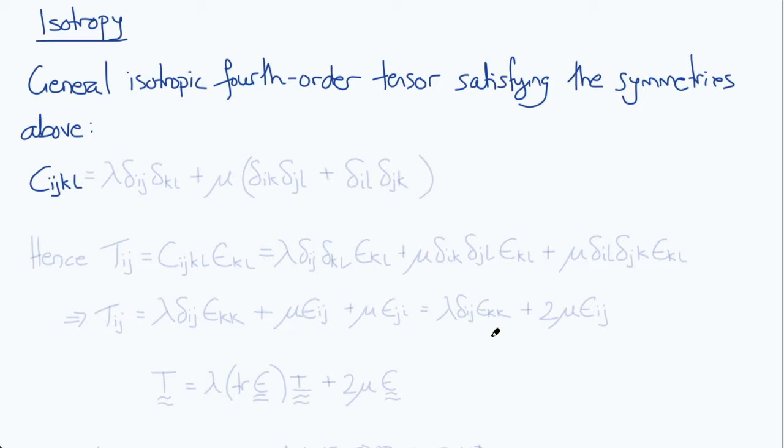So as we saw for the linear viscous fluid, we also see that the general isotropic expression has two material constants, lambda and mu. So we get Cijkl equals lambda times δij δkl plus mu times δik δjl plus δil δjk.